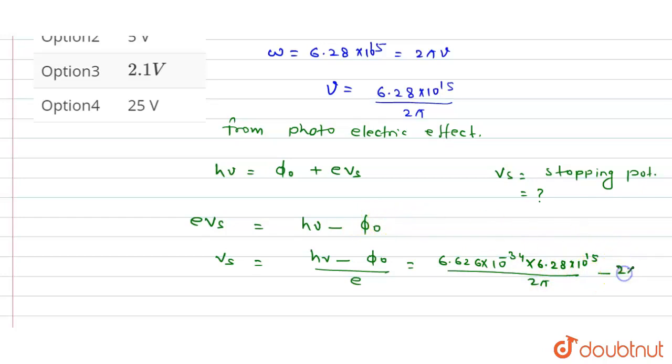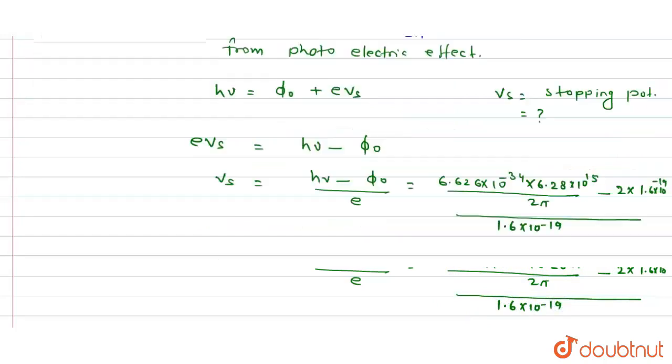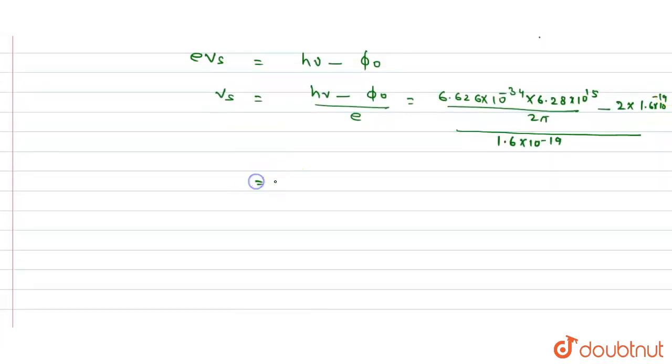This can be written as 2 × 1.6 × 10⁻¹⁹, whole divided by 1.6 × 10⁻¹⁹.